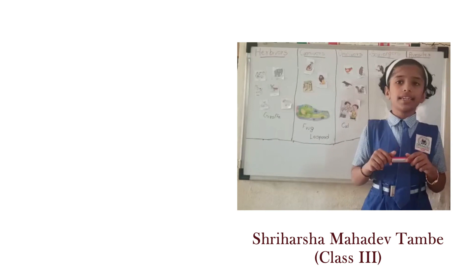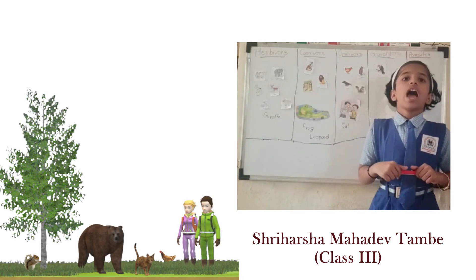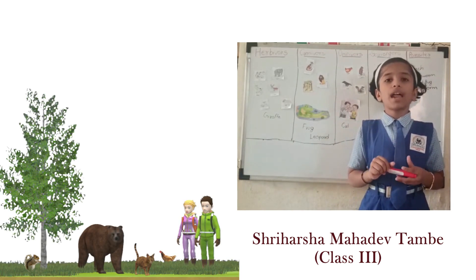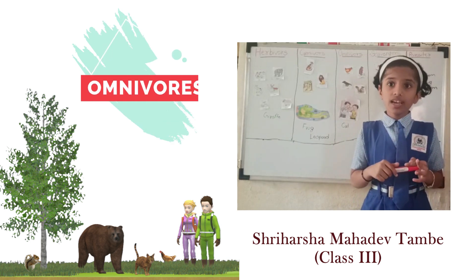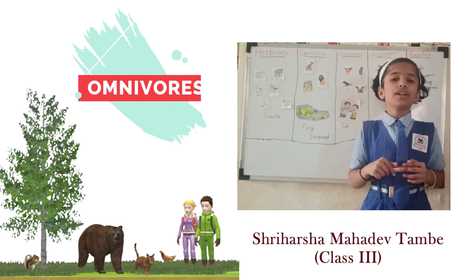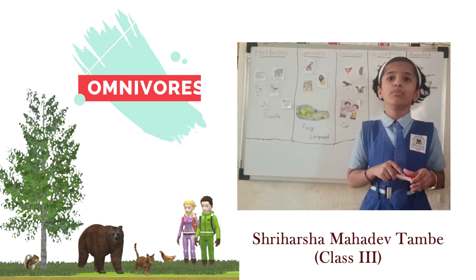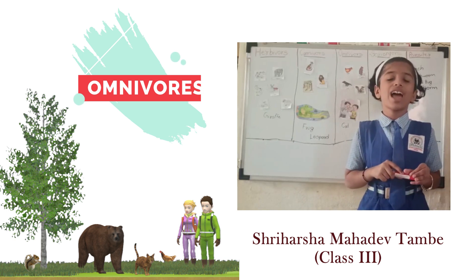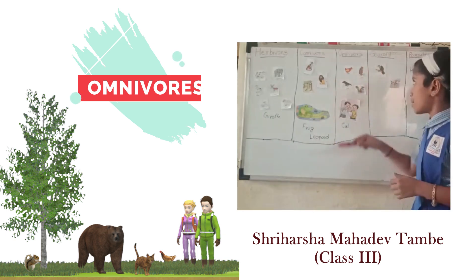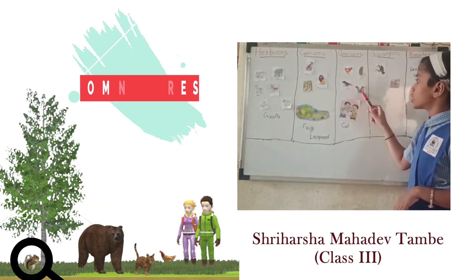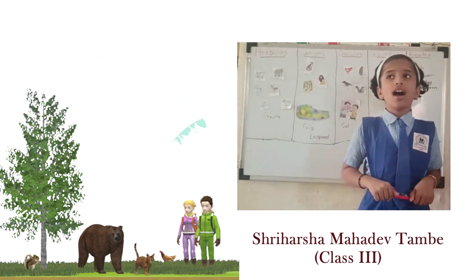The third category is Omnivores. Animals that eat both plants and animals are called Omnivores. They usually have sharp teeth in front for biting and flat teeth in the back for chewing. For example, pig, bear, squirrel, human beings, cats, etc.